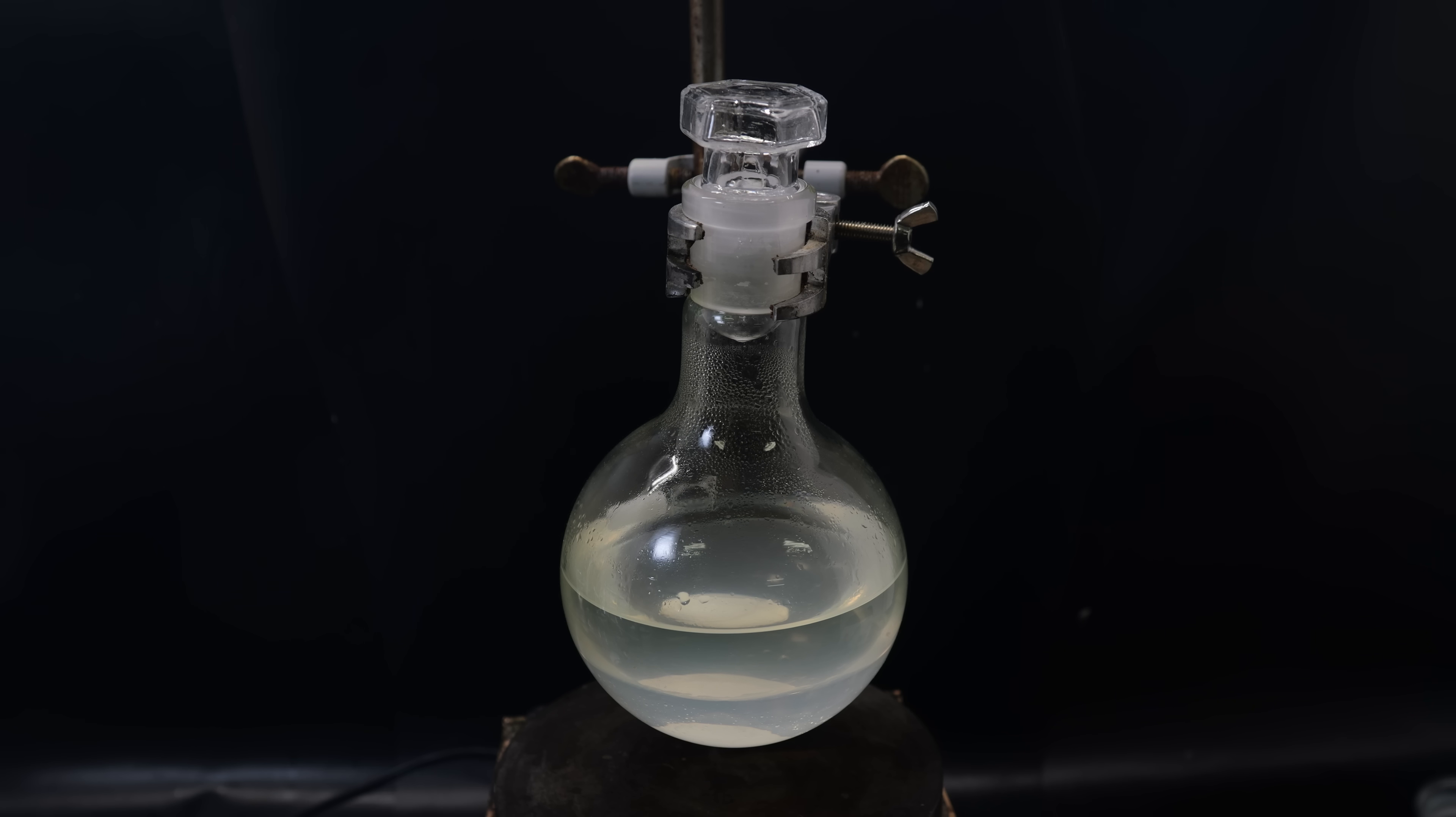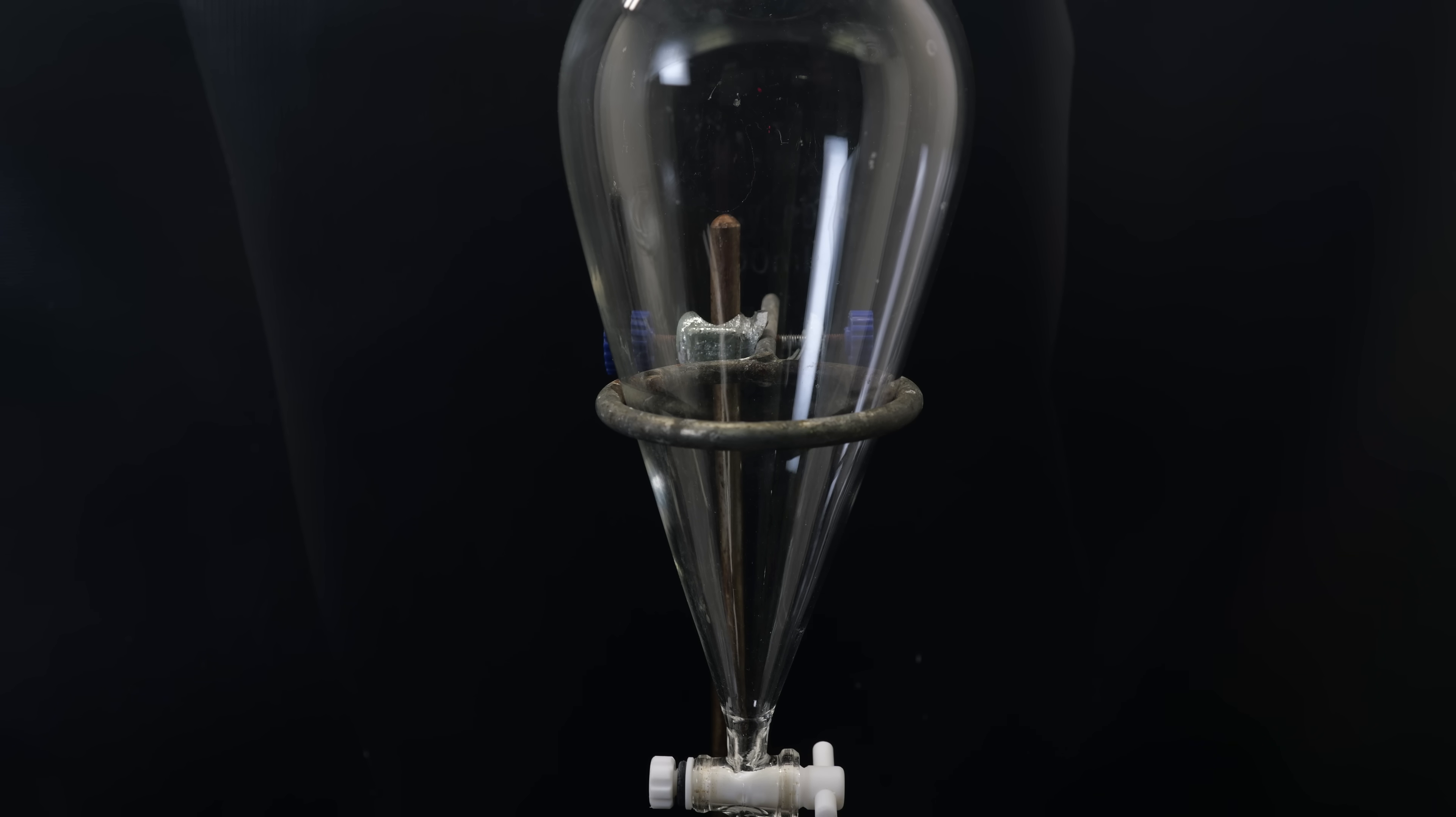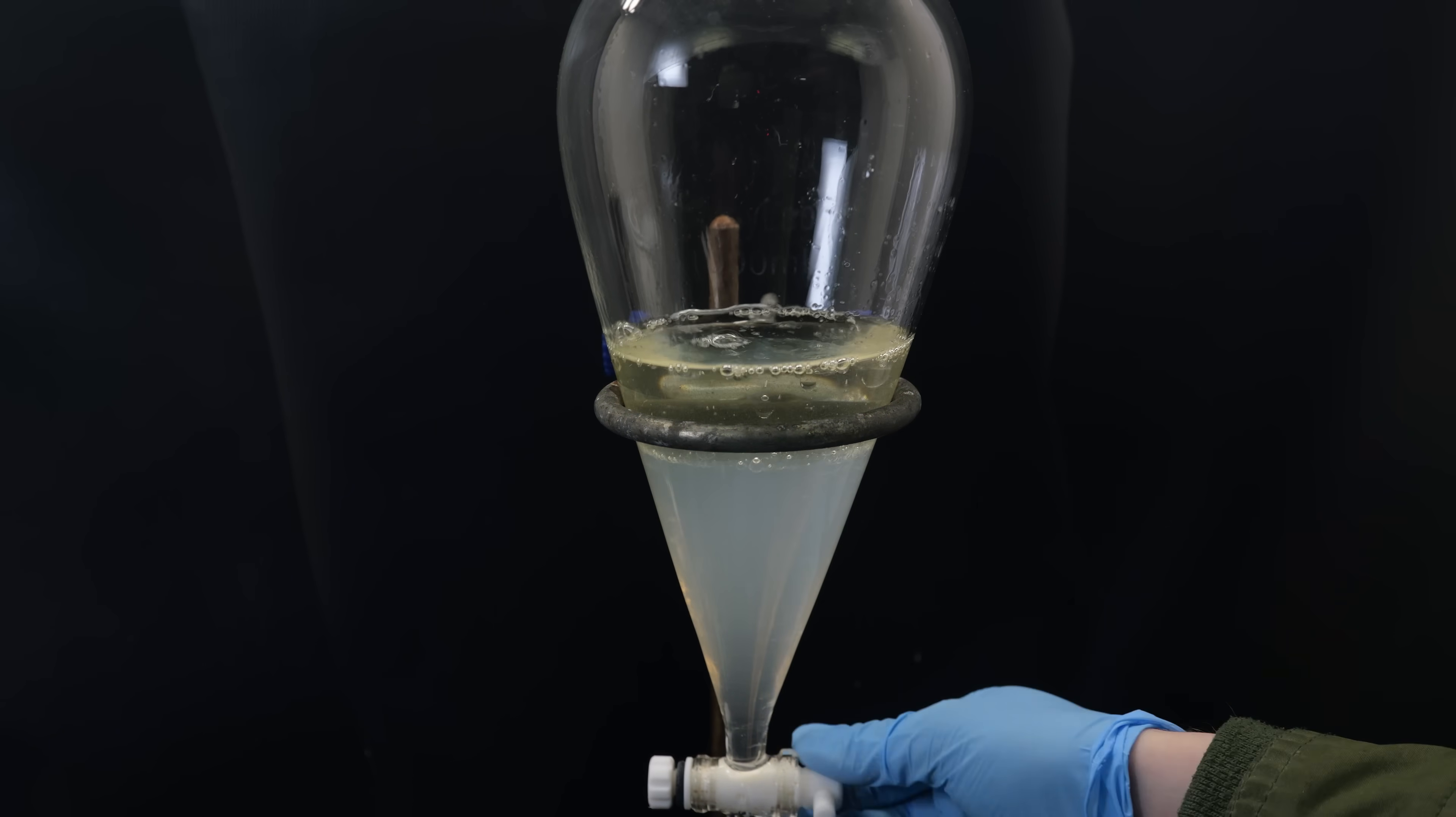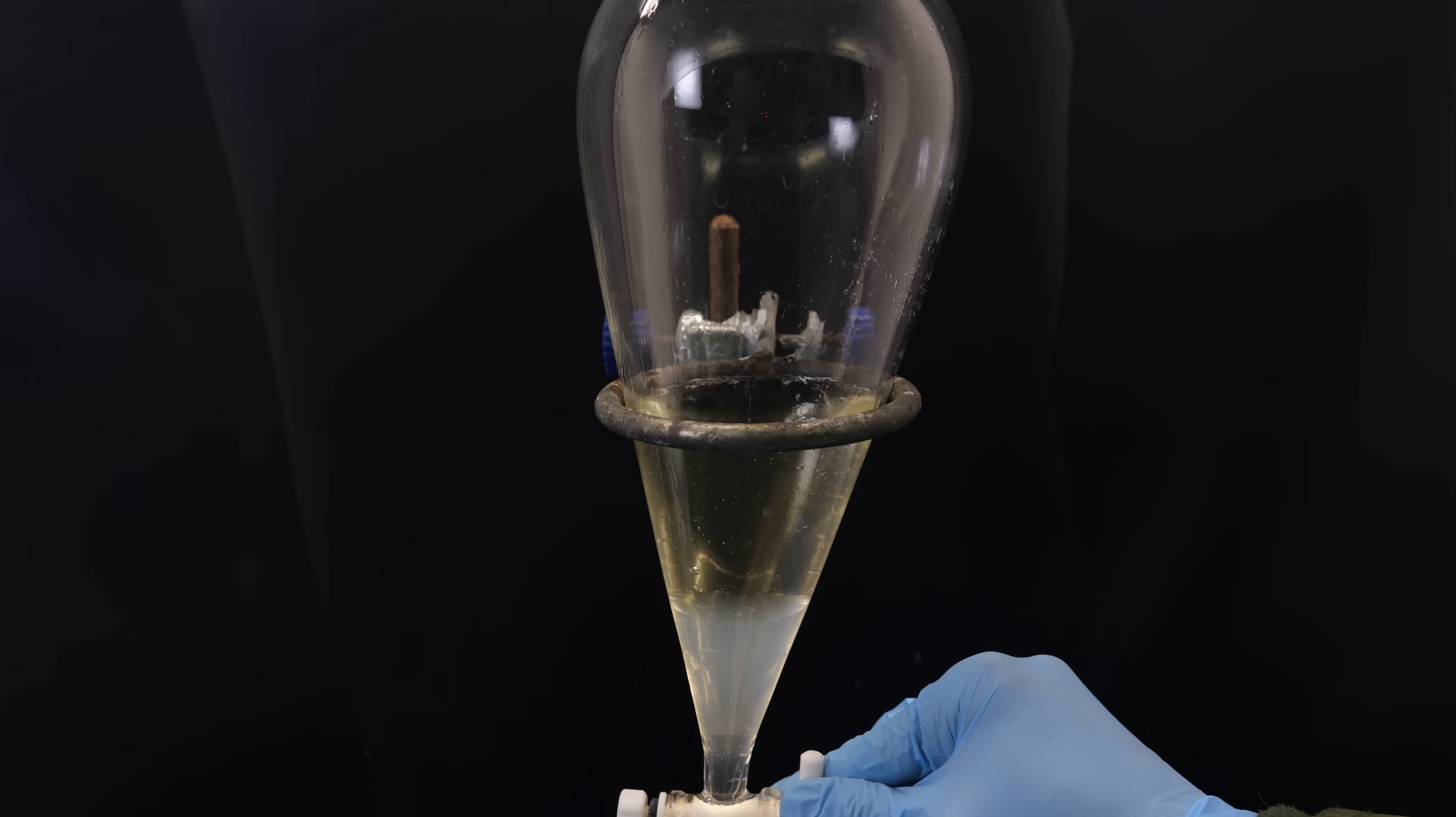When I returned, I turned off the stirring and removed the heat, and it separated into two layers, with the dichloromethane layer containing the product on the bottom. I separate these layers, and extracted the water layer two more times with dichloromethane, to make sure nothing is left behind.